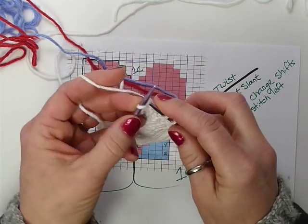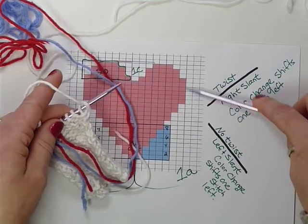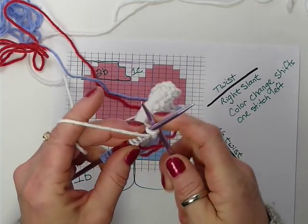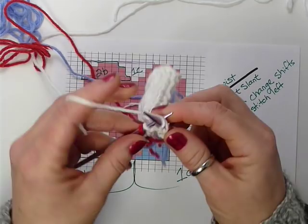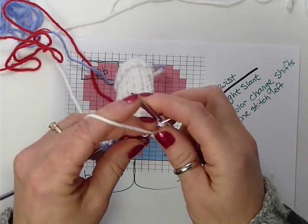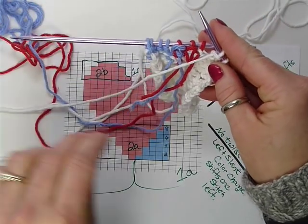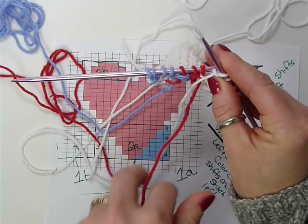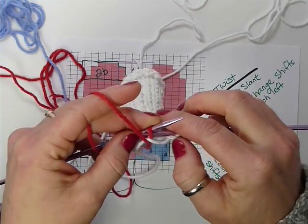Now in the next row, we're going to encounter the first vertical color change, like what you see here. Vertical color changes are always twisted. So, I'll show you how to do that again. So again, I'm going to let my old yarn tank over my new yarn, old over new, and then continue with the new color.